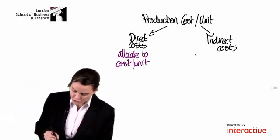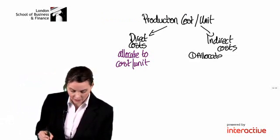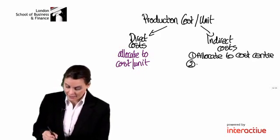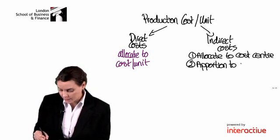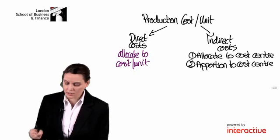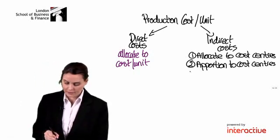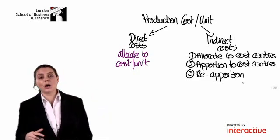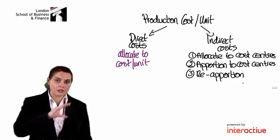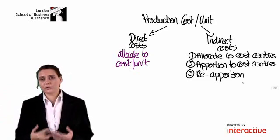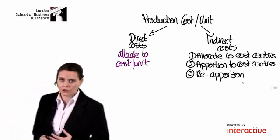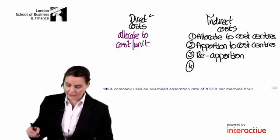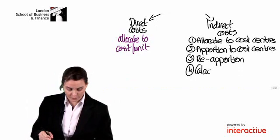Our four steps include: first, allocate our indirect costs to the relevant cost centre where possible. Second, we apportion the remaining costs across our factory cost centres in some fair way. The third step is reapportionment, where we move costs out of the service cost centres and into the production cost centres. After the first three steps, all of our indirect production costs will be sitting in our production cost centres, and we can then calculate our overhead absorption rate.